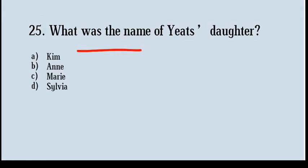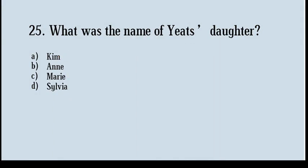What was the name of Yeats's daughter? Options: Kim, Ann, Mary, Sylvia. Correct answer: option number B, Ann. Ann Butler Yeats, the daughter of W.B. Yeats, was an Irish painter, costume and stage designer.